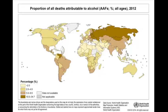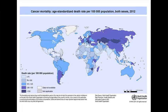Continuing with cancer mortality, we see the same overlapping patterns. On a map, these high cancer mortality areas are going to correspond to our stage four and late stage three countries.